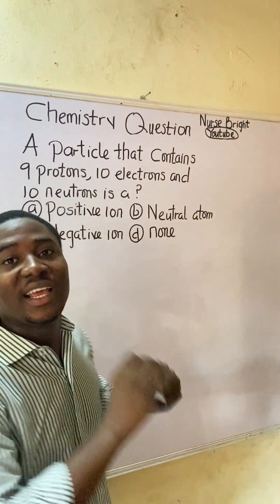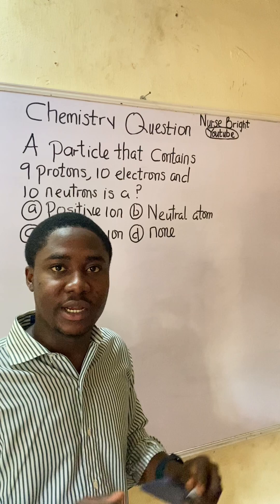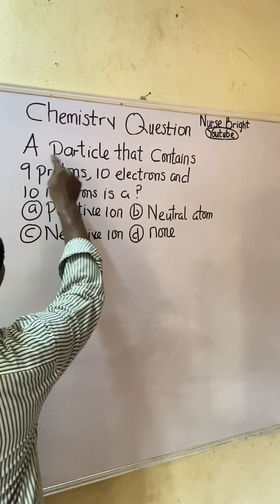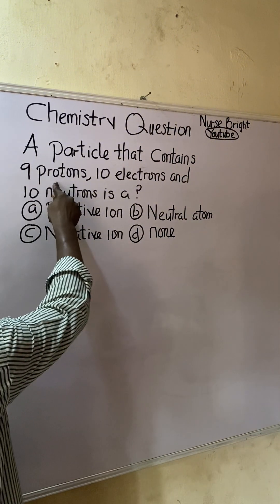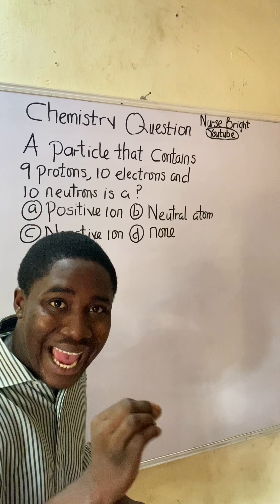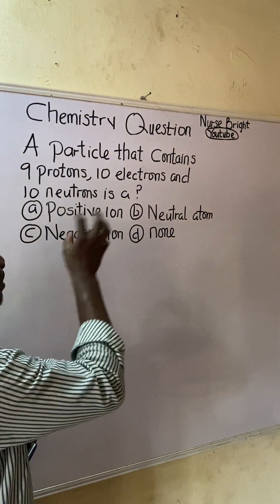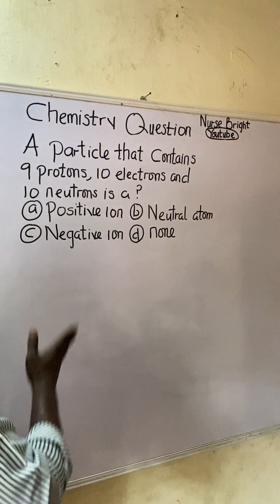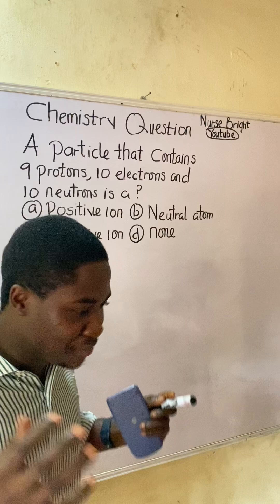You came across this question in your chemistry exam — how will you solve it? It is very easy. The question says: a particle that contains nine protons, 10 electrons, and 10 neutrons is — option A: a positive ion, B: neutral atom, C: negative ion, and D: none of the above.